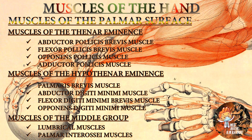Now we are going to talk about the muscles of the hand. Muscles of the hand are subdivided into muscles of the palmar surface and muscles of the dorsal surface. Palmar surface muscles include: muscles of the thenar eminence (abductor pollicis brevis, flexor pollicis brevis, opponens pollicis, and adductor pollicis), muscles of the hypothenar eminence (palmaris brevis, abductor digiti minimi, flexor digiti minimi brevis, and opponens digiti minimi), and muscles of the middle group (lumbrical muscles and palmar interossei).